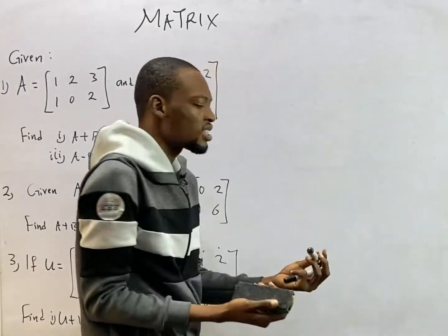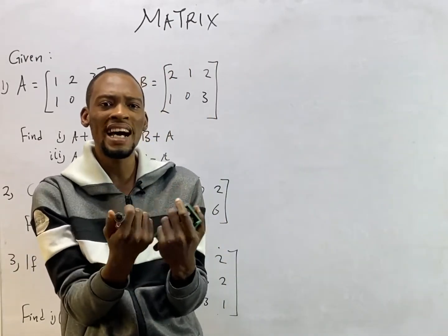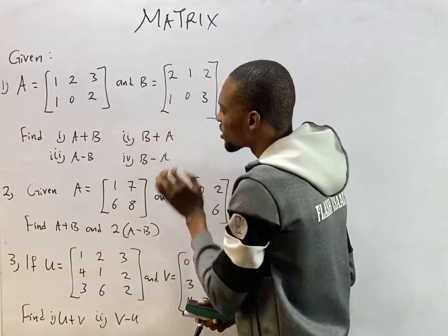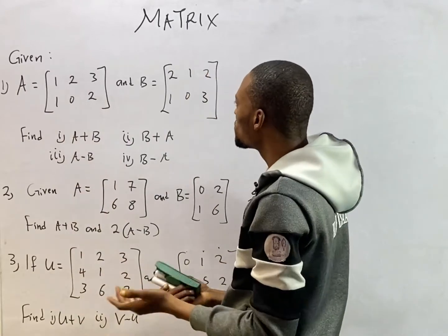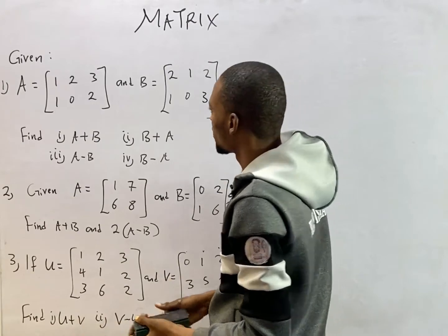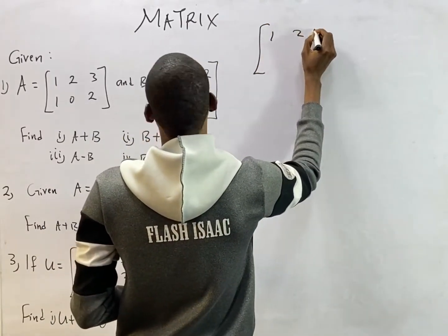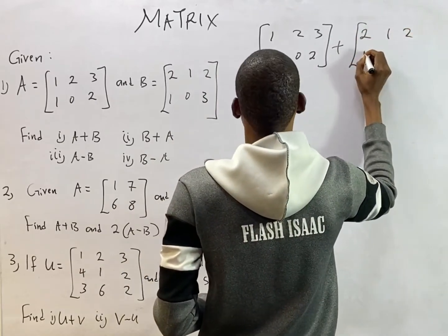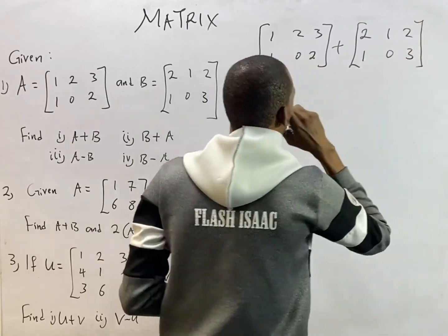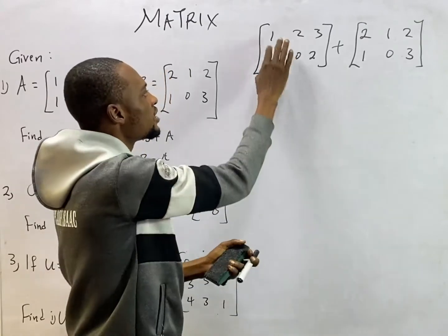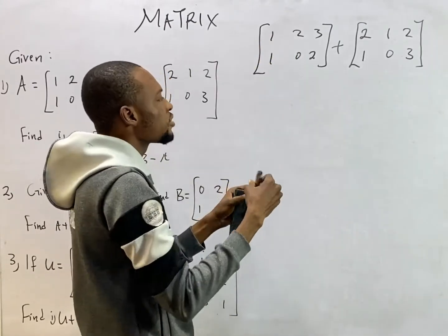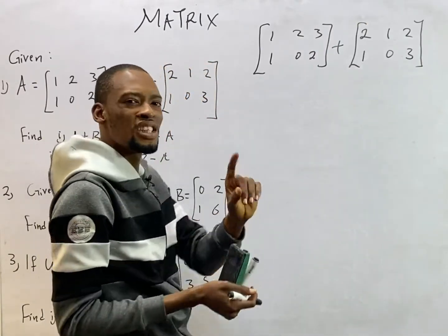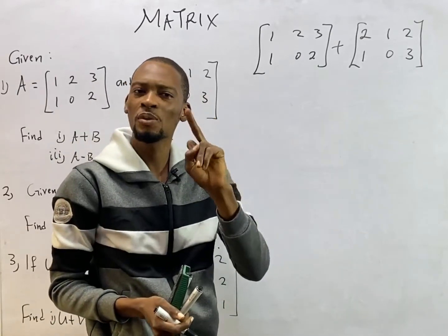Addition and subtraction of matrices is simple — you add similar elements. For example, question one gives us matrix A and matrix B. The first question asks us to find A plus B. To add matrices, they must be of the same order. So A plus B: matrix A is one, two, three, one, zero, two and matrix B is two, one, two, one, zero, three. We pick similar values — elements in the same row and column position.